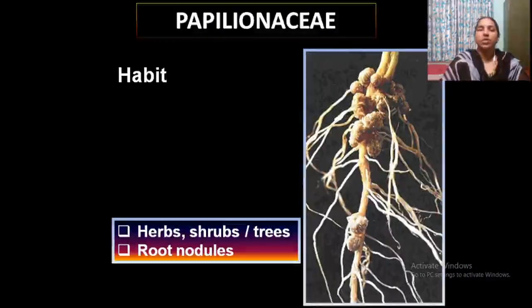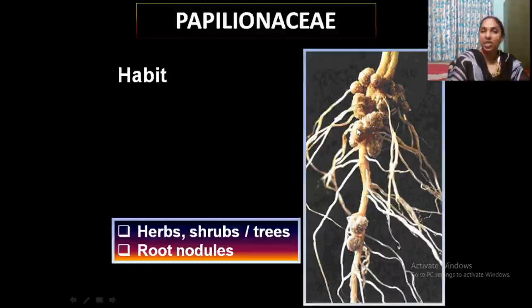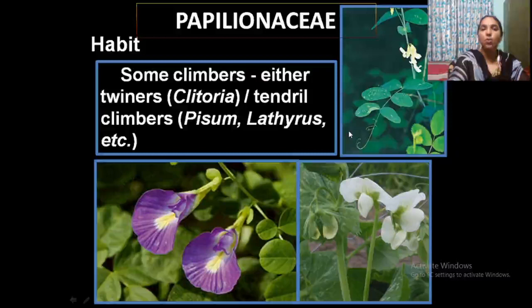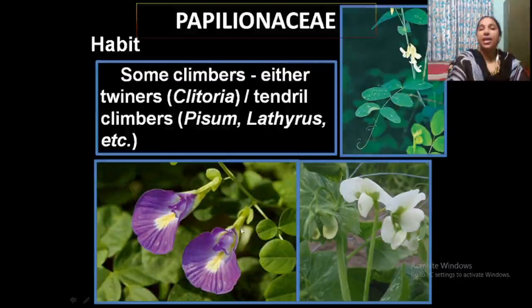A very important feature is habit. These plants show a peculiar feature — the roots contain root nodules, some tumour-like growths in the root system. These root nodules contain bacteria that are able to fix atmospheric nitrogen. This is one important feature of the family Papilionaceae. Most plants belonging to this family have this feature. Most of them are climbers, and some grow as herbs and shrubs, such as Clitoria (Shankhapushpa) and Pisum, growing by using their tendrils. They may be twiners or climbers usually.